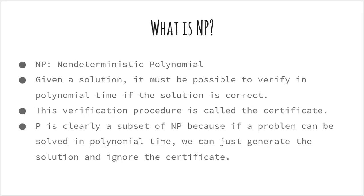Now what is NP? NP stands for non-deterministic polynomial. It is used to represent a class of problems that satisfy the following condition: supposing we could generate a guess about the solution, the solution should be verifiable as valid or invalid in polynomial time. This verification step is called a certificate. Now P is clearly a subset of NP, because if a problem can be solved itself in polynomial time, we can just generate the solution and ignore the certificate.